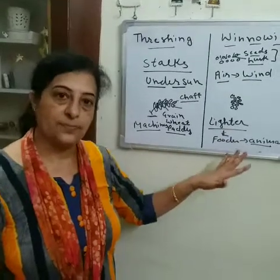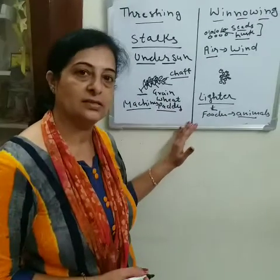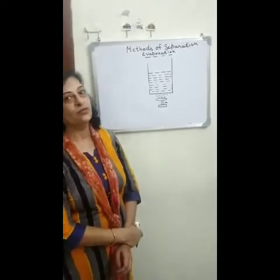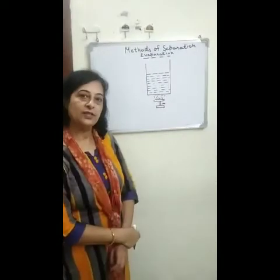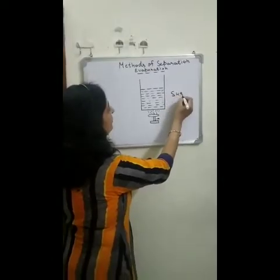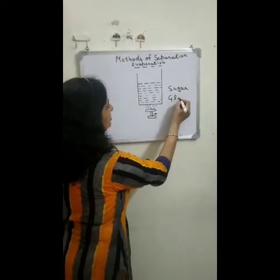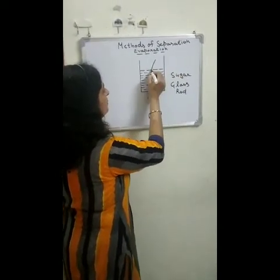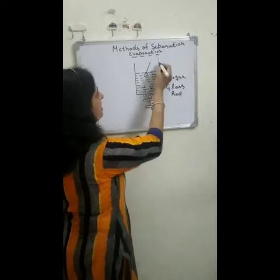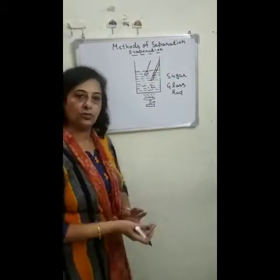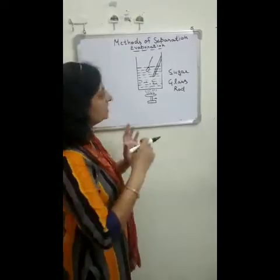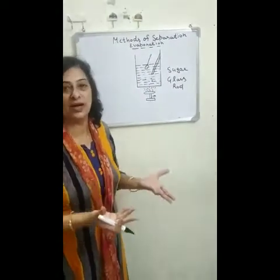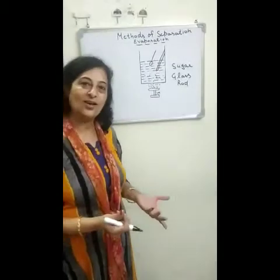Those are the two methods of separation mainly used by farmers. Now let us see the process of evaporation through an activity. For this activity, you need a beaker half filled with water, a tablespoon of sugar, and a glass rod. Take the beaker half filled with water and add a tablespoon of sugar into it. Stir it well with the glass rod — the sugar will completely dissolve and disappear in the water.